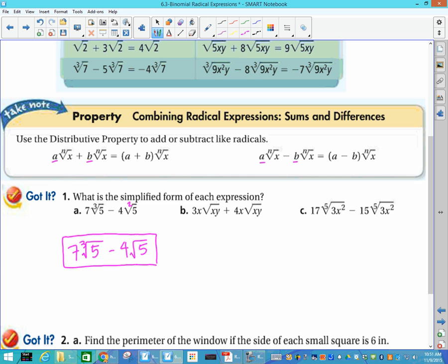Looking at this next one, 3x times the blob plus 4x times the blob. These two are the same exact thing. They're not going to change. What's 3x plus 4x? That is 7x. So my answer becomes 7x times that blob, and that blob was the square root of xy.